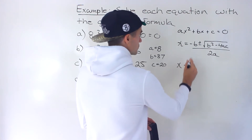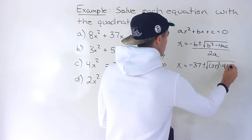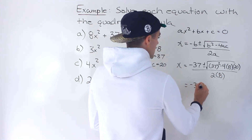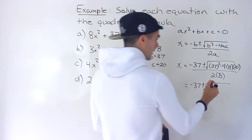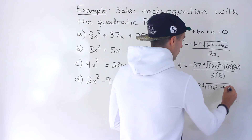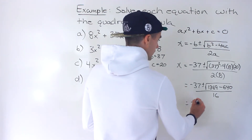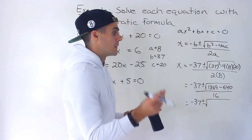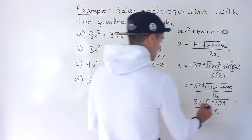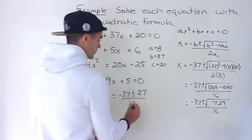Plugging everything in, we'll have x equals negative 37 plus or minus the square root of 37 squared minus 4 times 8 times 20, all over 2 times 8. So we get negative 37 plus or minus the square root of 1,369 minus 640, all over 16. That gives us negative 37 plus or minus the square root of 729, all over 16. The square root of 729 is a nice smooth value — it's going to be 27, all over 16.